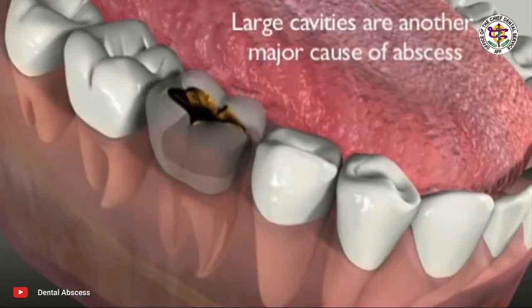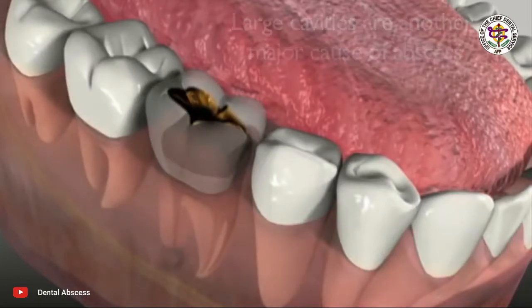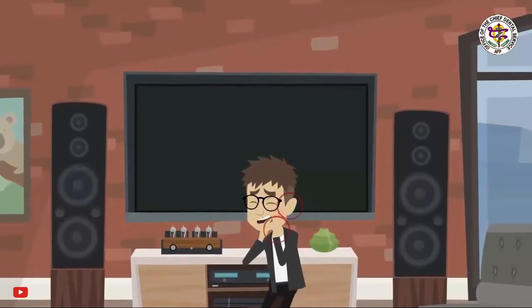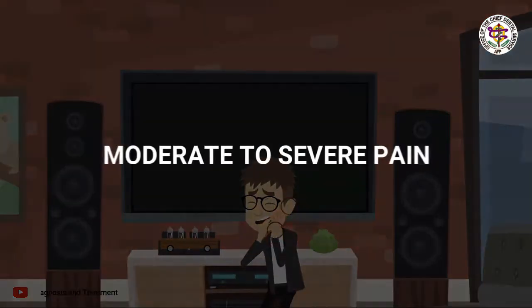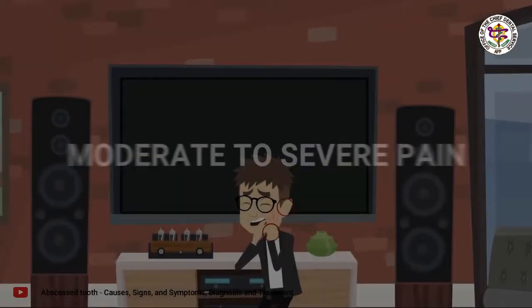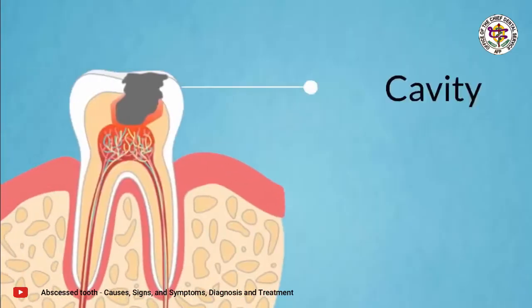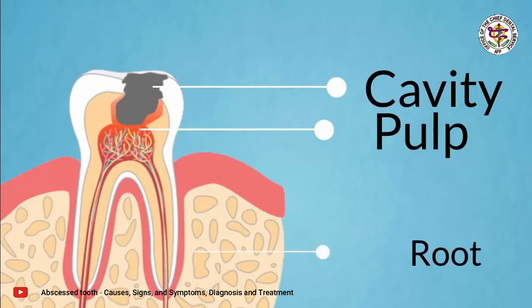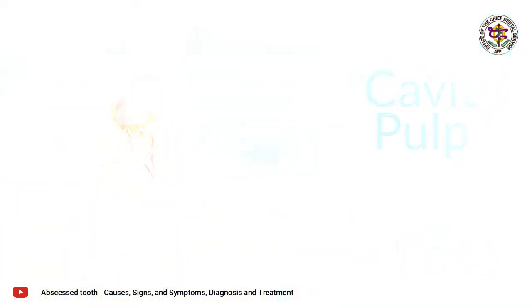Three: tooth abscess. When decay touches the nerve inside the tooth, it aches even when you try to sleep. When infection reaches the inside of a tooth, it can lead to a tooth abscess — one of the most painful situations a person can experience. A cavity that is not filled grows bigger and deeper until it touches the nerve.